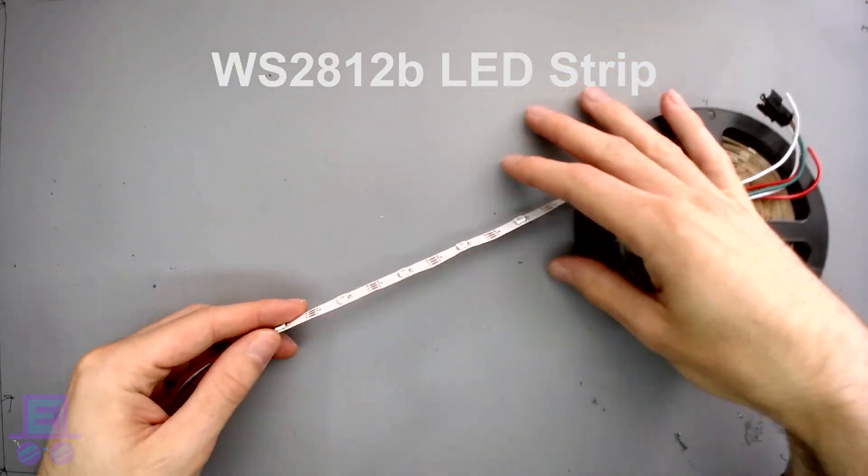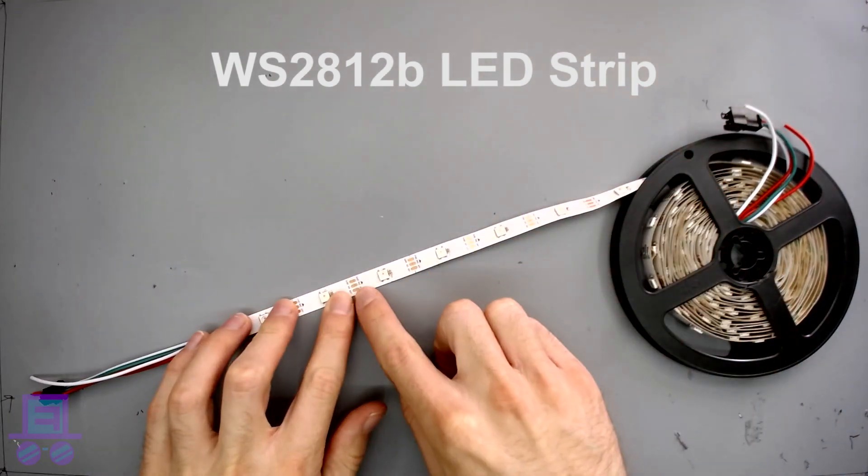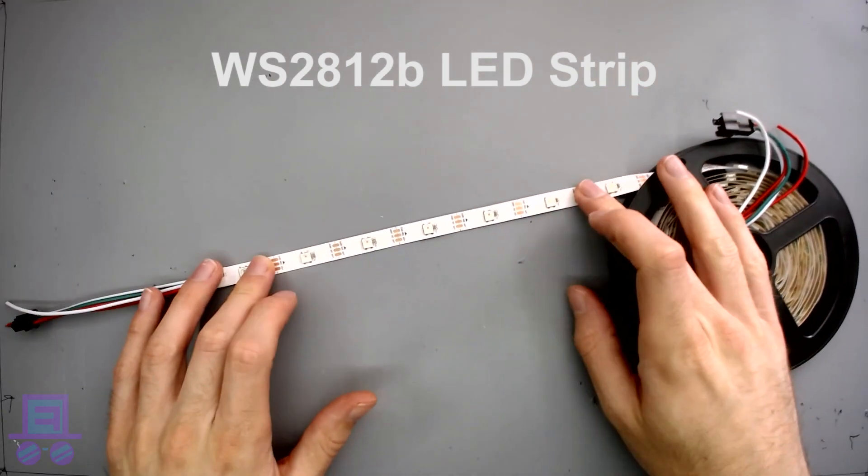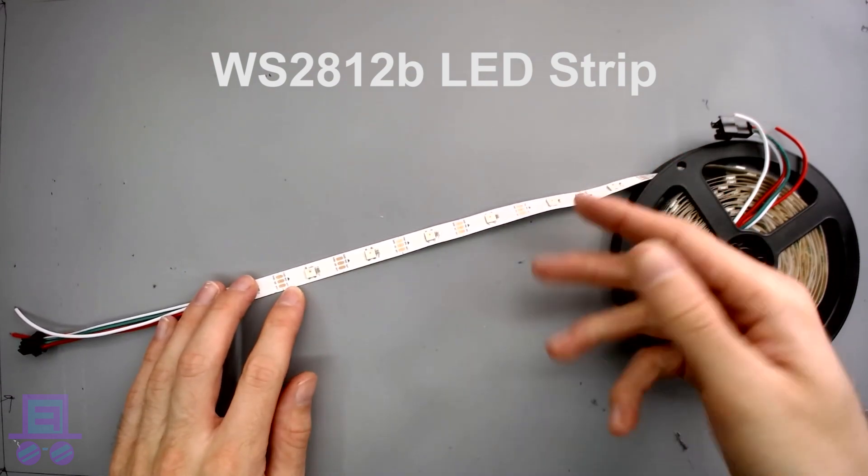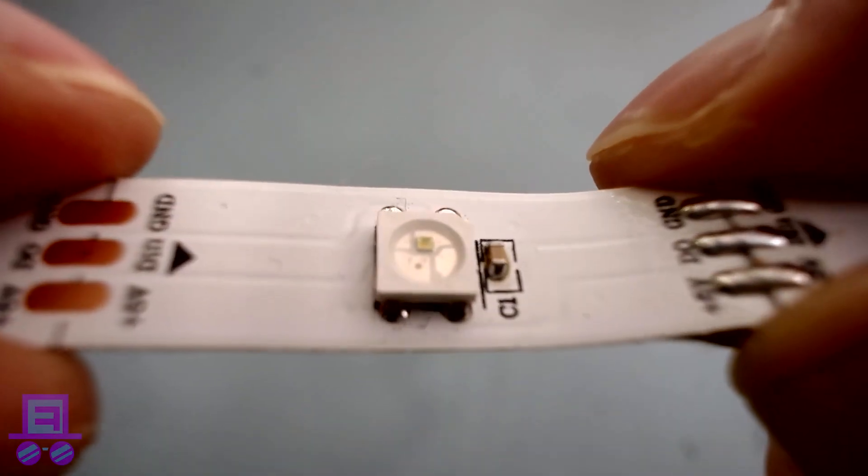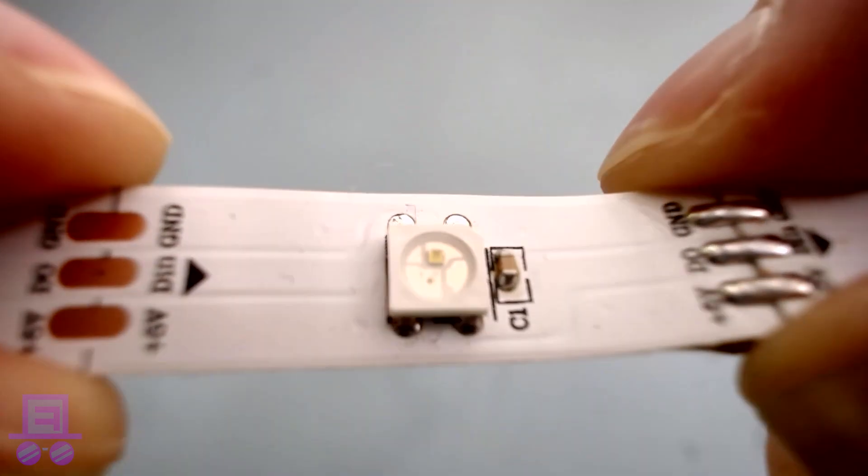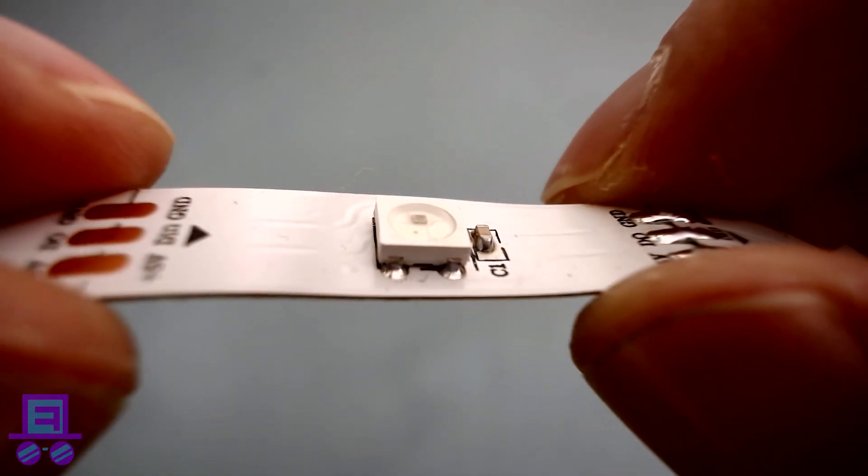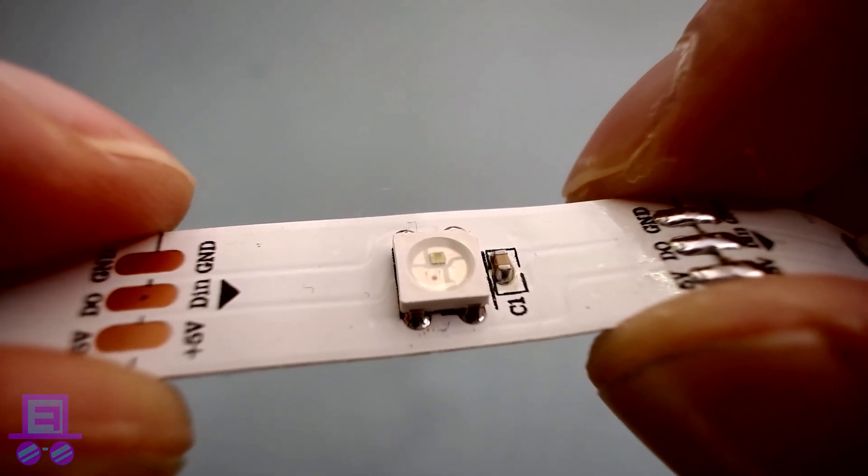Let's first go through the anatomy of a WS2812B LED. These LEDs are the most common RGB individually addressable LED. This means we can connect as many as we like and still control the color and brightness of each LED individually. Each of these LEDs actually contains three smaller LEDs: one red, one green, and one blue, hence the term RGB. We can mix varying amounts of each LED to make any color we want.